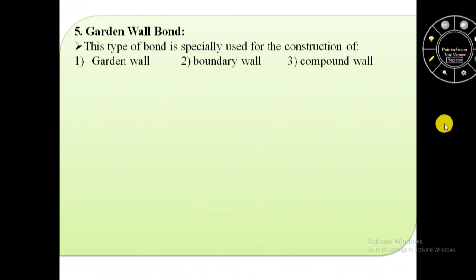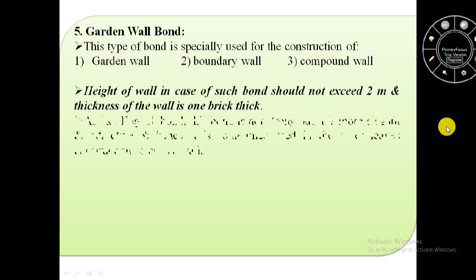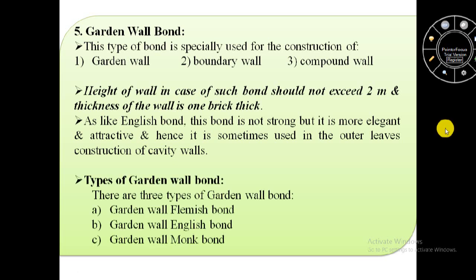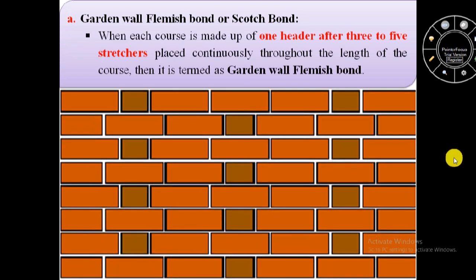Next type of bond is garden wall bond, which is specially used for construction of garden walls, boundary walls, and compound walls. The height of the wall in this case should not exceed two meters and thickness is one brick thick. Like English bond, garden wall bond is not strong but it is more elegant and attractive, and is sometimes used in the outer leaves of cavity walls. There are three types: garden wall Flemish bond, garden wall English bond, and garden wall monk bond.